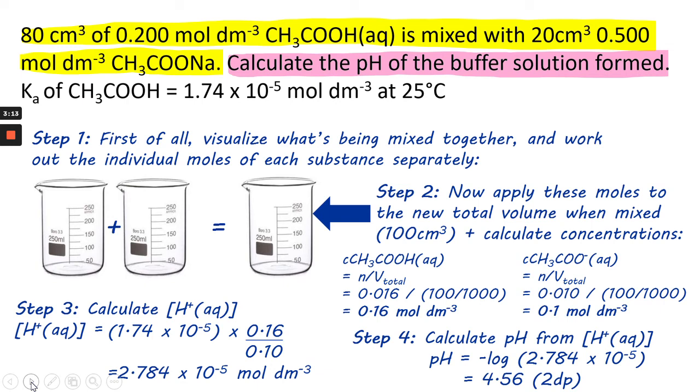So, now you put that into pH equals minus log H plus, and that gives you 4.56. Remembering, of course, that you always quote a pH to two decimal places.